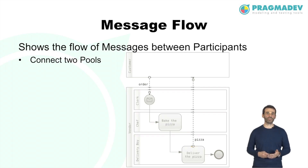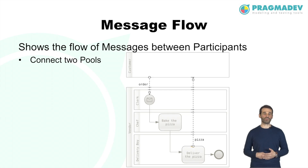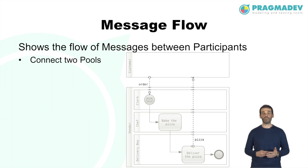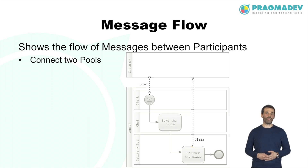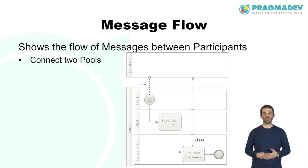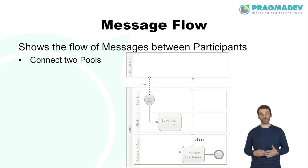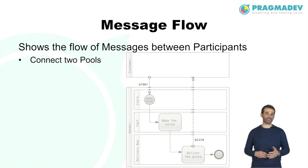A message flow is used to show the flow of messages between two participants. A message flow must connect two separate pools, connecting either to the pool boundary or to flow elements within the pool. Message flows must not connect two elements within the same pool.